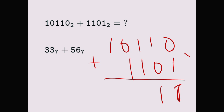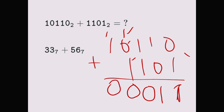Two divided by two is one remainder zero, so I write the remainder which is zero, then the one — the quotient — I carry it over. So we now have one plus zero plus one plus one plus zero plus one, which gives us two. Two divided by the base two is one remainder zero, so I write the remainder zero and carry the one. Again one plus one is two, remainder zero, carry the one. So the answer is 100011.